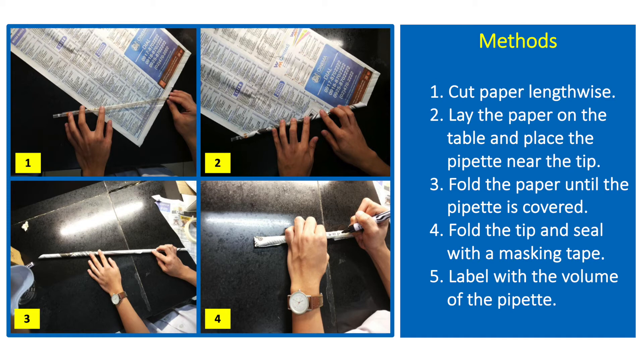Cut a piece of paper lengthwise, lay the paper on the table, and place the pipette near the tip. Fold the paper until the whole length of the pipette is covered. Fold the tip of the paper, seal with masking tape, then label the pipette with its volume or capacity.